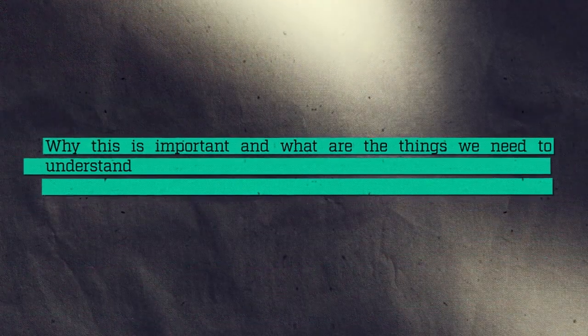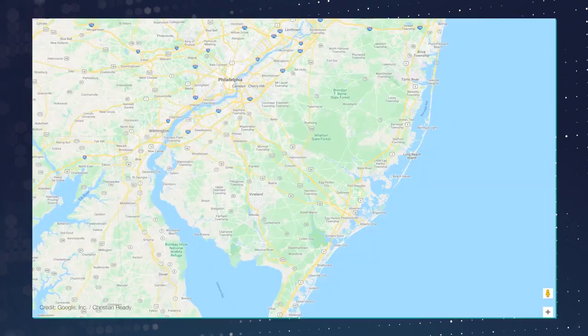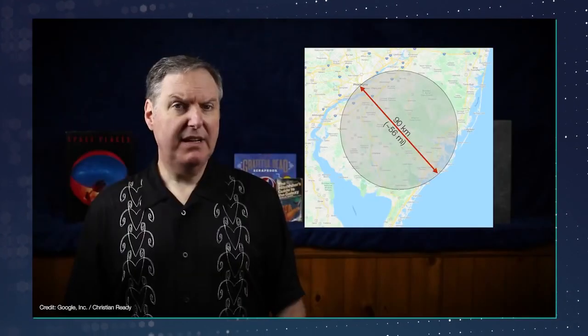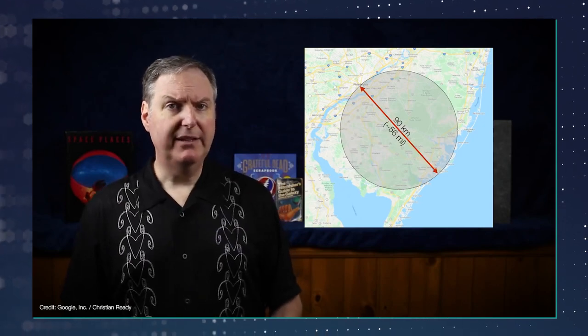Why this is important and what are the things we need to understand? Consider an exo-Earth 100 light-years away. In order to make a one-pixel image of the planet's surface, we'd need a telescope 90 kilometers in diameter. That's large enough to extend from Philly to Atlantic City. It's not impossible, but it'll take a while.